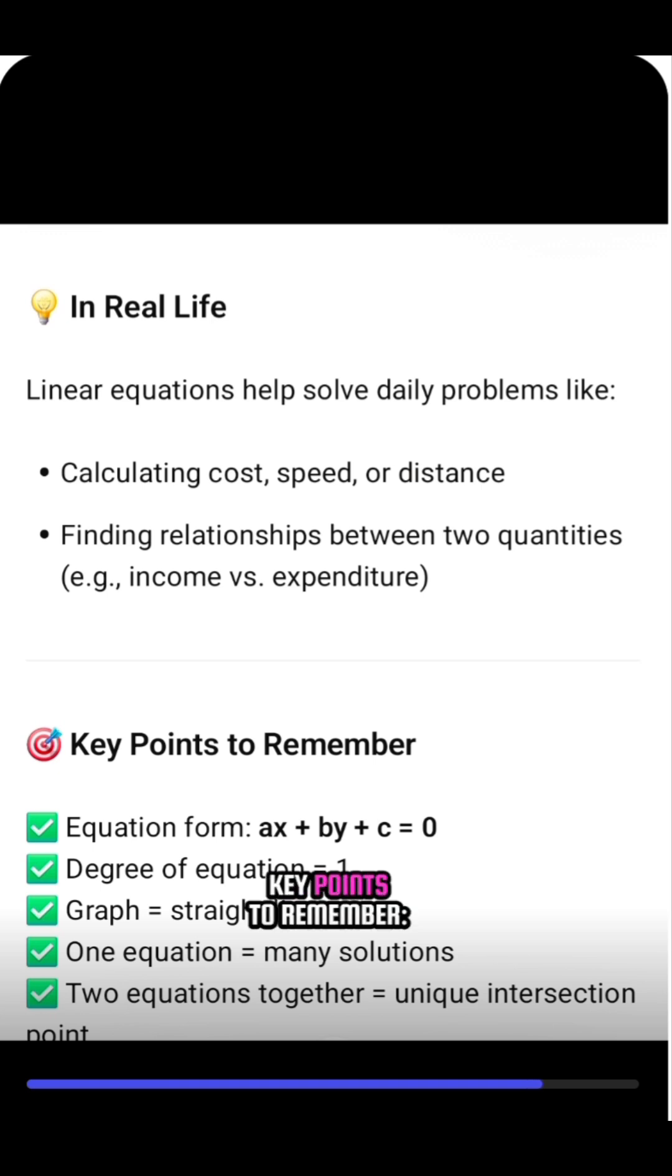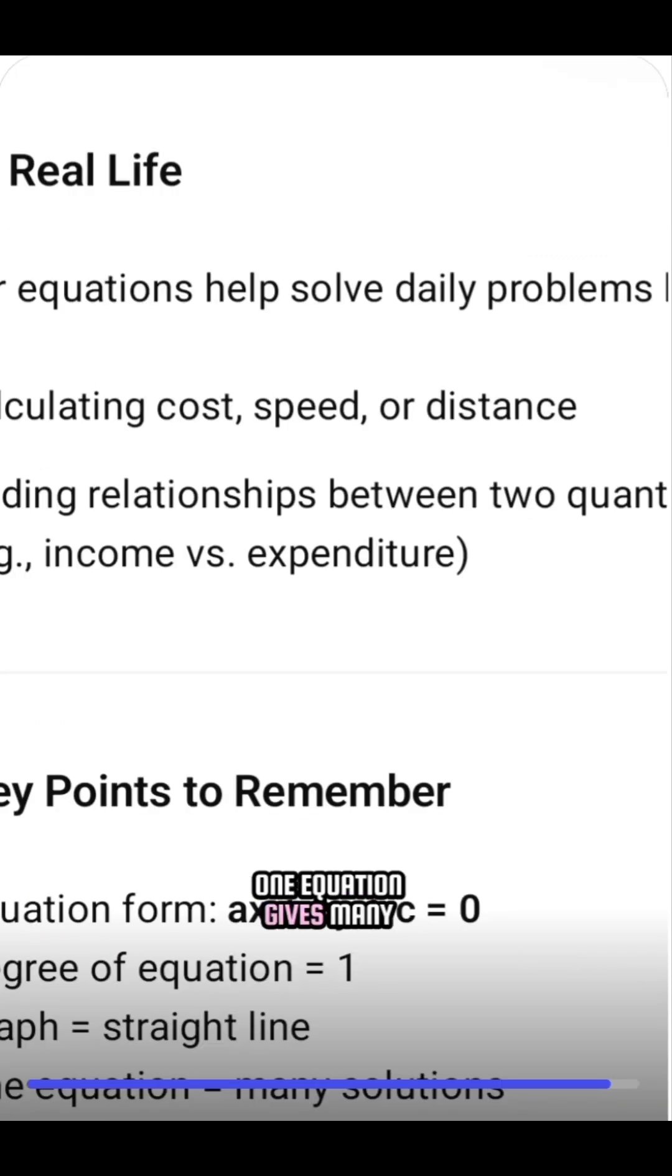Key points to remember: The form is ax + by + c = 0. The degree of the equation is 1, and it always graphs as a straight line. One equation gives many solutions, but two equations give a unique intersection.